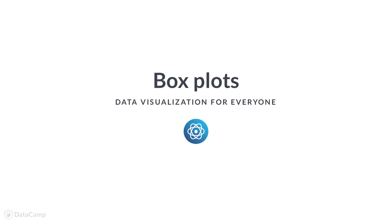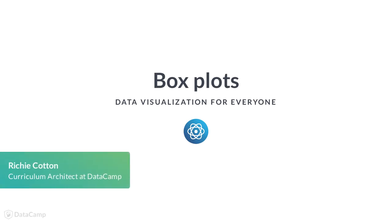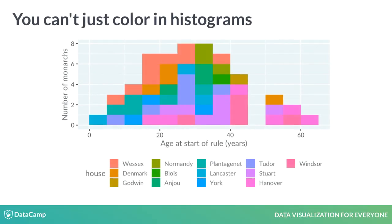Individual histograms are great, but there's a problem if you want to draw lots of them. Let's revisit the Kings and Queens dataset. Suppose we want to see the distribution of ages for each royal house. A naive solution might be to draw the same histogram but using different colours for each house. Sadly, this is a horrible muddled mess.